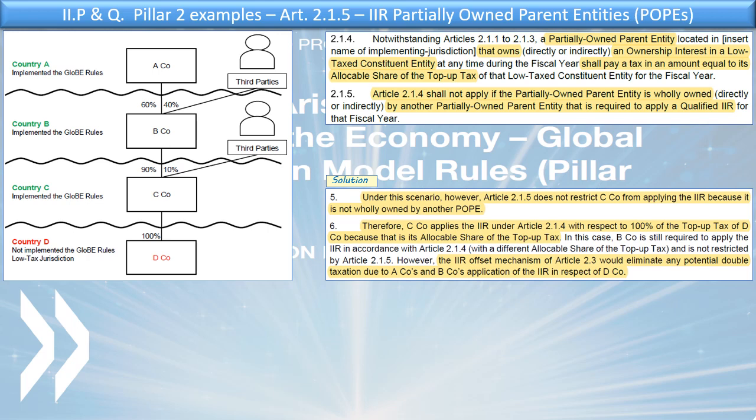It is also important to remember that even though the main rule is that you always start the IIR from a top-down approach — starting at the ultimate parent entity and going down if it is not subject to tax — there is another rule: the POPE rule, which trumps the ultimate parent entity rule. When you have a partially owned parent entity, you need to start with that partially owned parent entity first, allocating as much of the top-up tax to it before going further up the chain. So it is not true that you always start at the ultimate parent entity — you only start there if there are no partially owned parent entities in the chain.